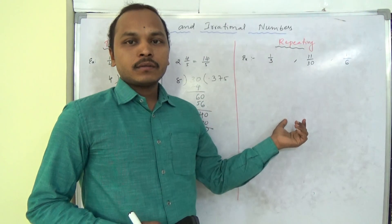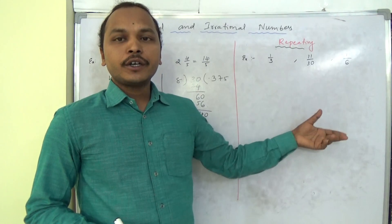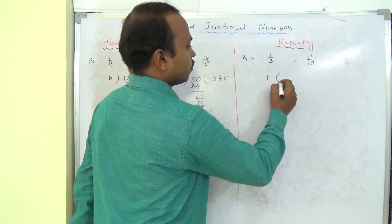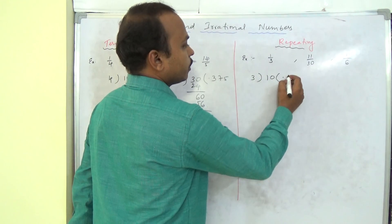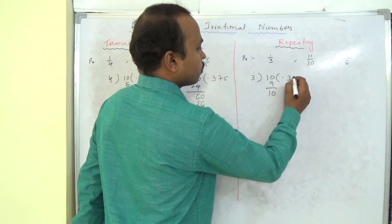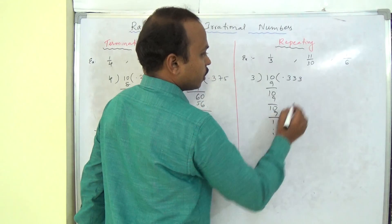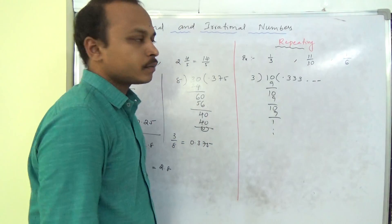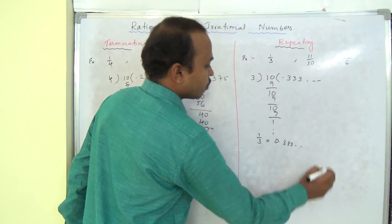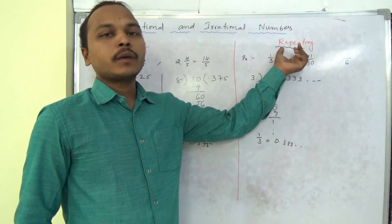Now these are repeating decimals. After doing certain divisions, it keeps on going continuously — you never get remainder 0. For example, 1 by 3: 1 divided by 3 gives 0 and the decimal point. 3 into 3 is 9, remainder 1 again; 3 into 3 is 9, remainder 1 again — it keeps repeating. So 1 by 3 is written as 0.333... continuing. These are all repeating decimals.